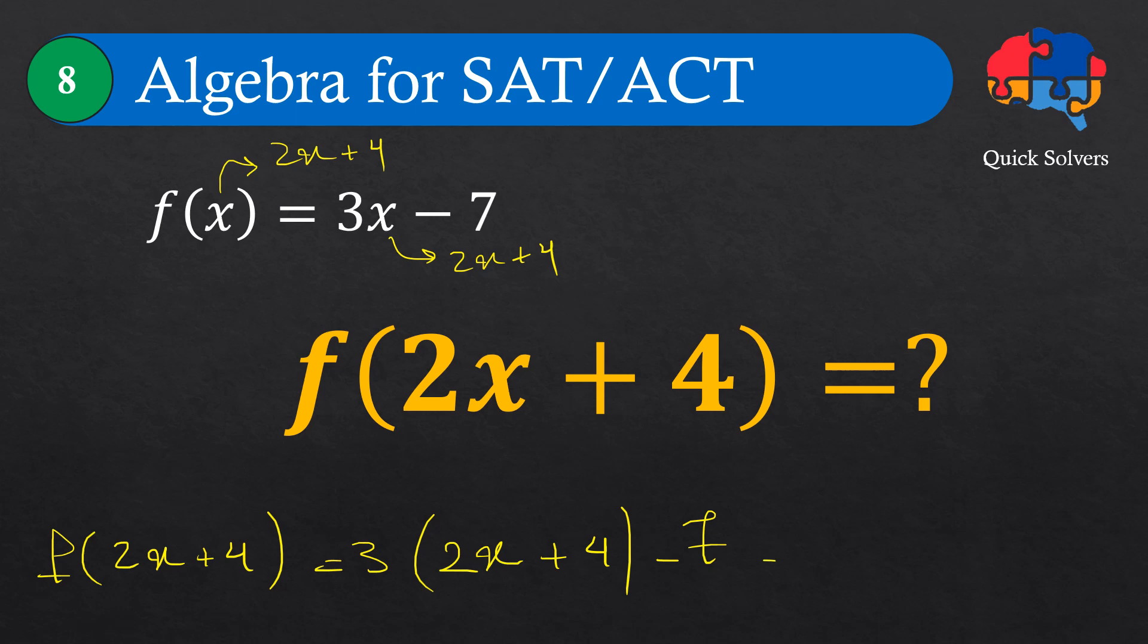Now it's time to distribute this 3 to this expression. Then we will get 6x plus 12 minus 7, which tells us that f of 2x plus 4 is 6x plus 5.